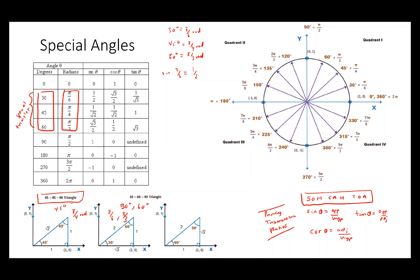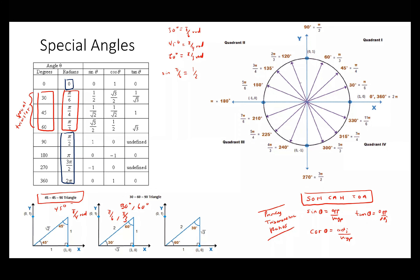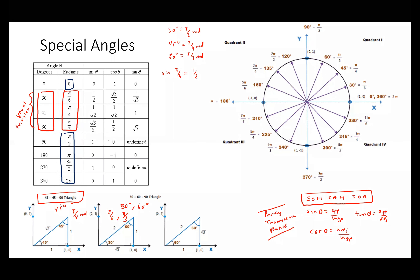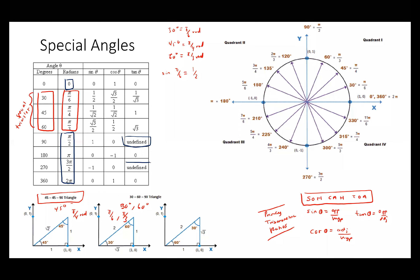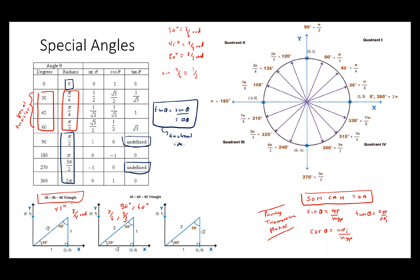Also, 0 degrees is 0 radians, π/2, π, 3π/2, and 2π are also special angles that you can determine through the unit circle. You can notice that tan 90 is undefined and tan 270 is undefined. The reason is that tan theta is defined as sine theta over cosine theta — this is called a quotient identity.